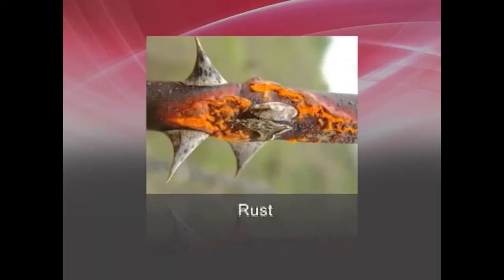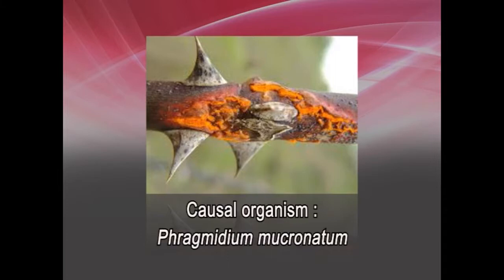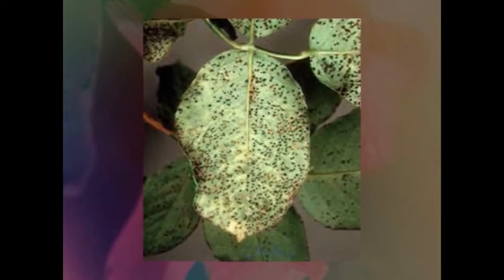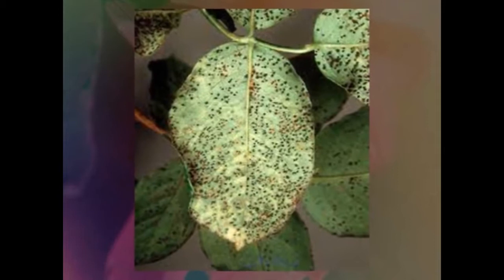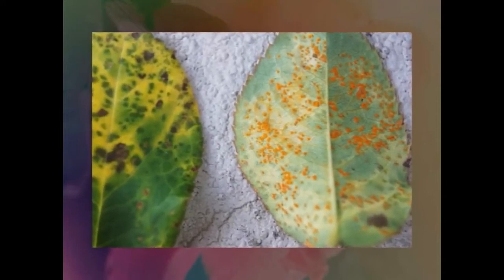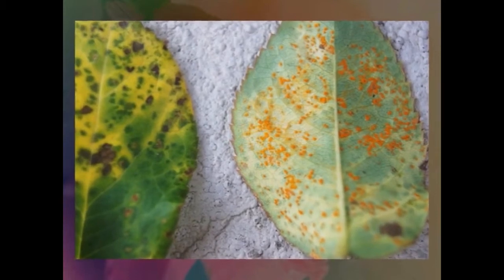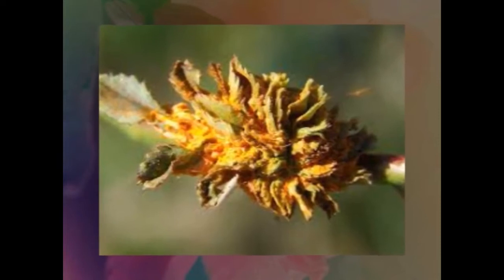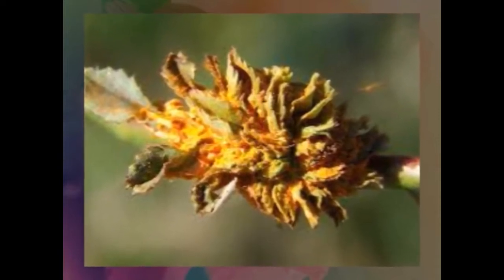The next important disease is rust, caused by Phragmidium mucronatum. Rust first shows itself as small rust-colored spots on the undersides of leaves, eventually becoming visible on the upper sides as the fungal disease gains control. Infected plants have small orange pustules on the underside of leaves, while the upper sides may discolor and drop.